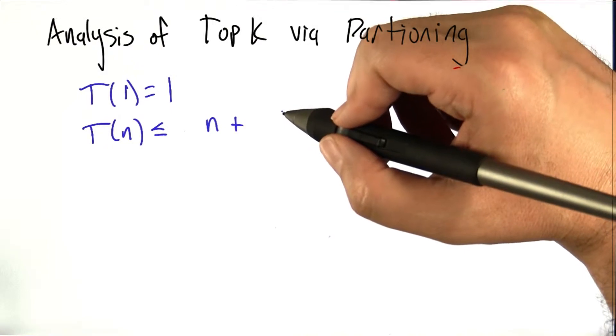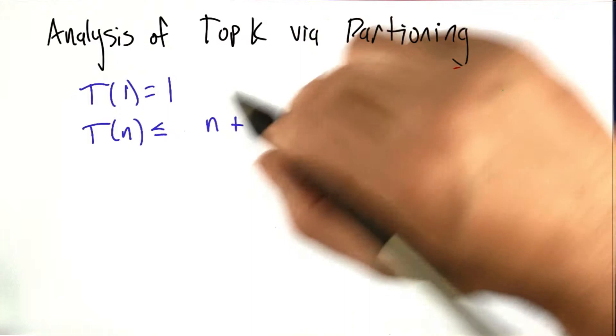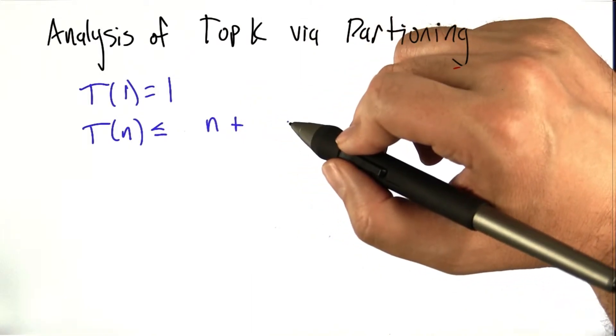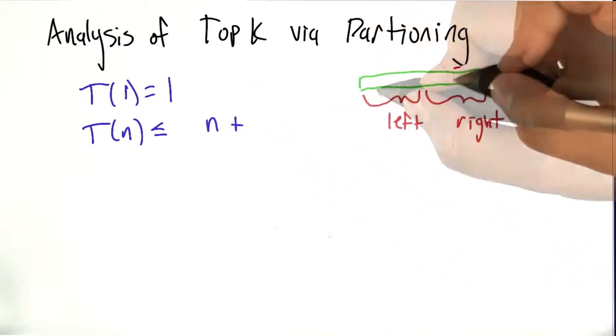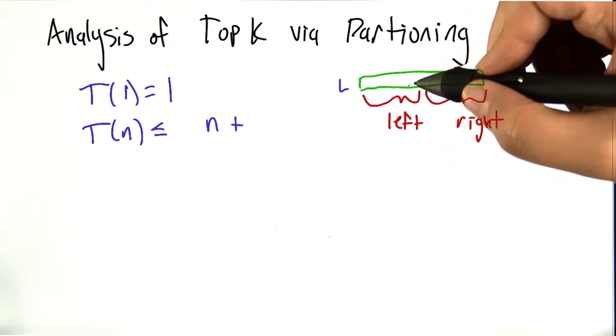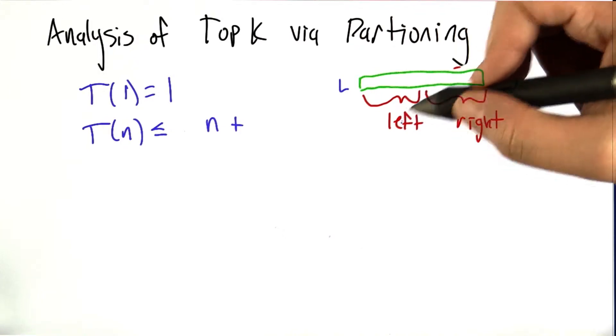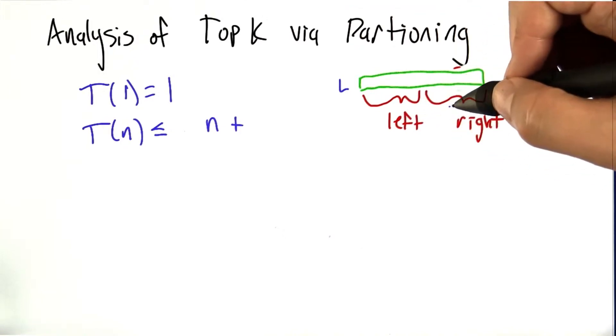Then it's going to recurse, assuming it hasn't gotten really lucky. And since this is a less than or equal to, let's assume it didn't get lucky. It's going to recurse on either the left or the right. Now the partitioning algorithm is going to split this list l into a left and a right. In the different cases, it's going to recurse on either the left or the right. But we don't know which one it's going to recurse on and we don't know which one is bigger.